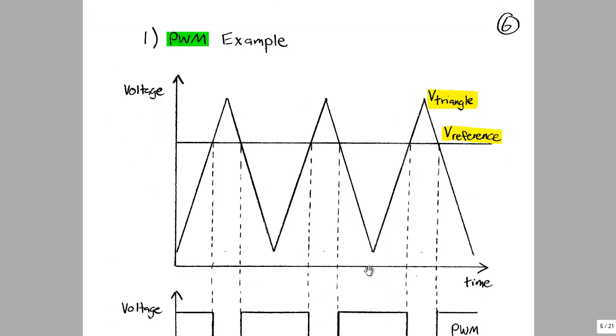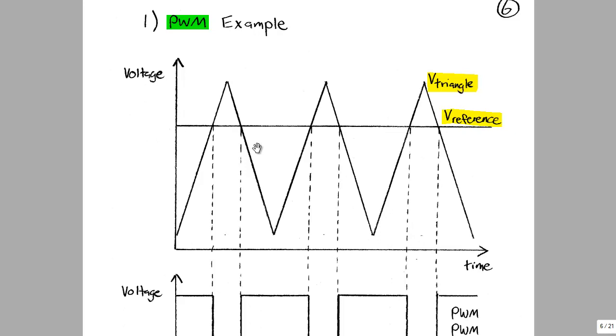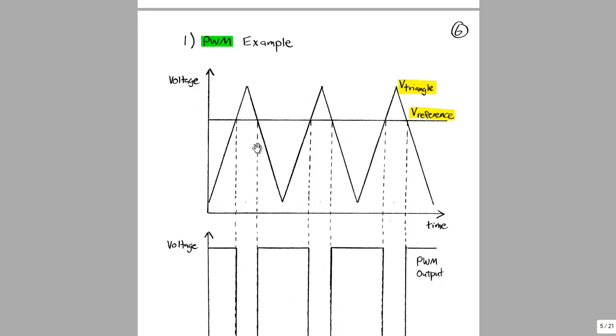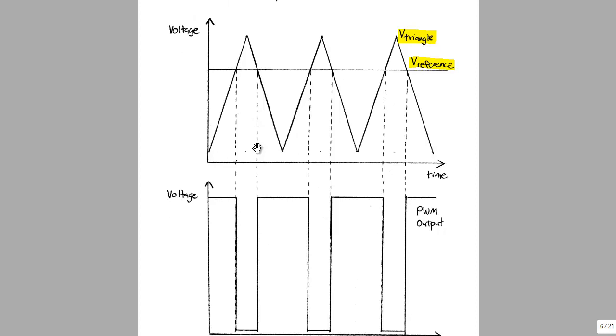So here's an example of pulse width modulation. We can see the triangle wave here, V-triangle. And then we can also see the reference voltage. In this case, just a DC level. So in software, this comparator is constantly comparing these two signals and determining what the output should be. If I zoom out here, we can see the resulting digital signal, the pulse width modulated output here.